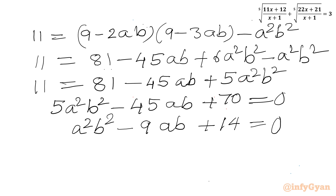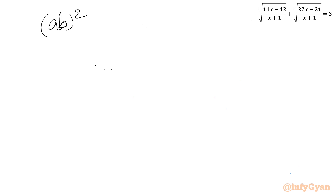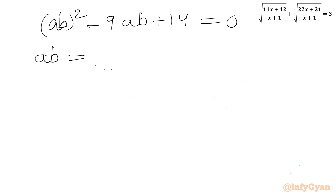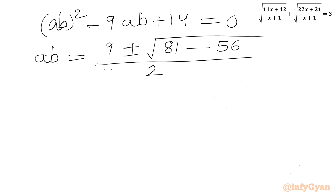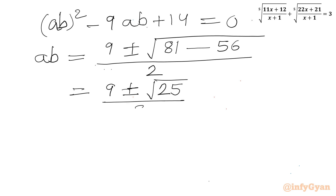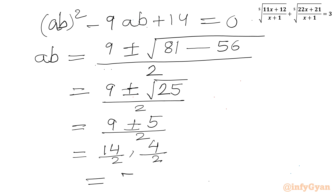This is a quadratic equation in ab. Using the quadratic formula: ab equals (9 plus or minus the square root of 81 minus 4 times 14) over 2, which is (9 plus or minus the square root of 25) over 2, giving (9 plus or minus 5) over 2. So ab equals 14 over 2 or 4 over 2, meaning ab equals 7 or ab equals 2.